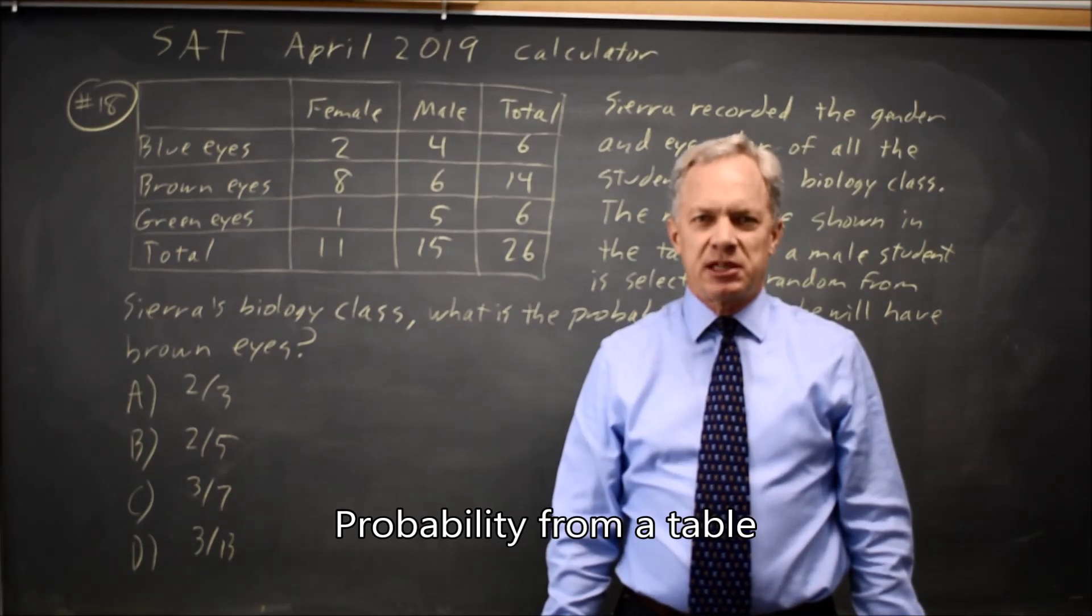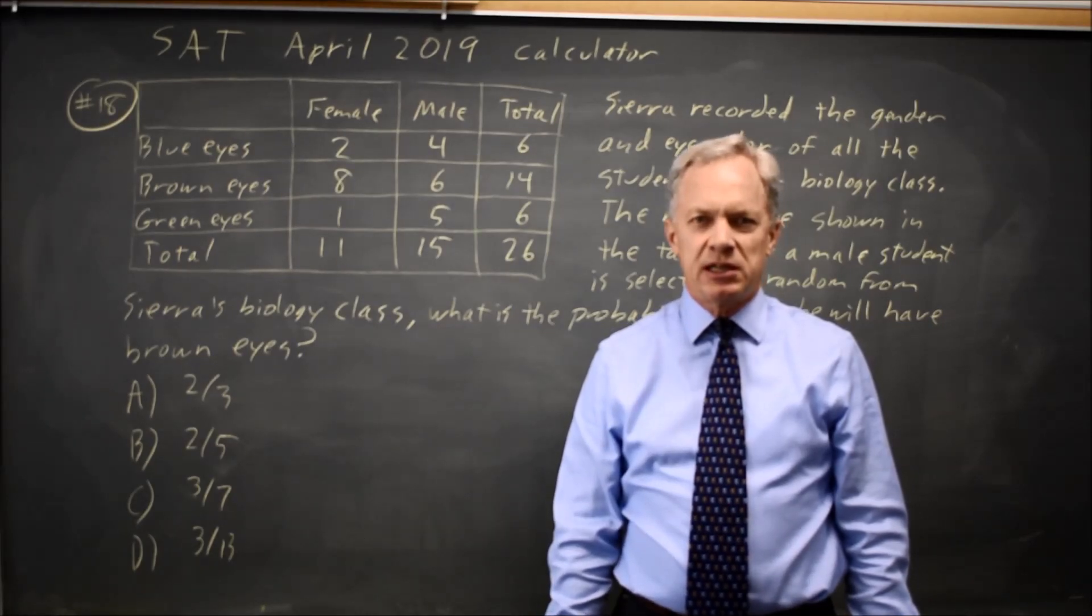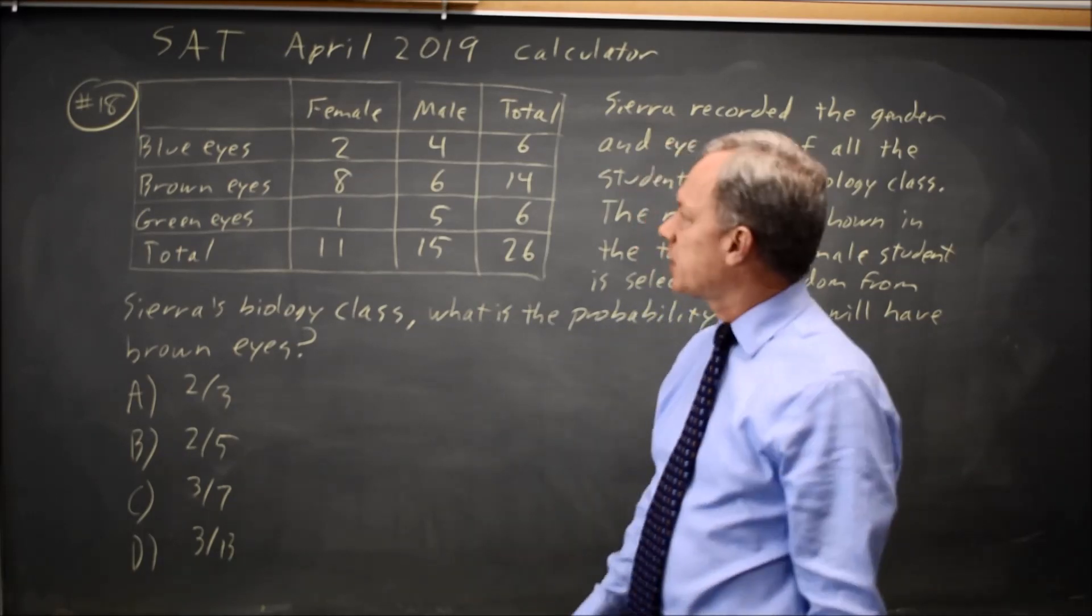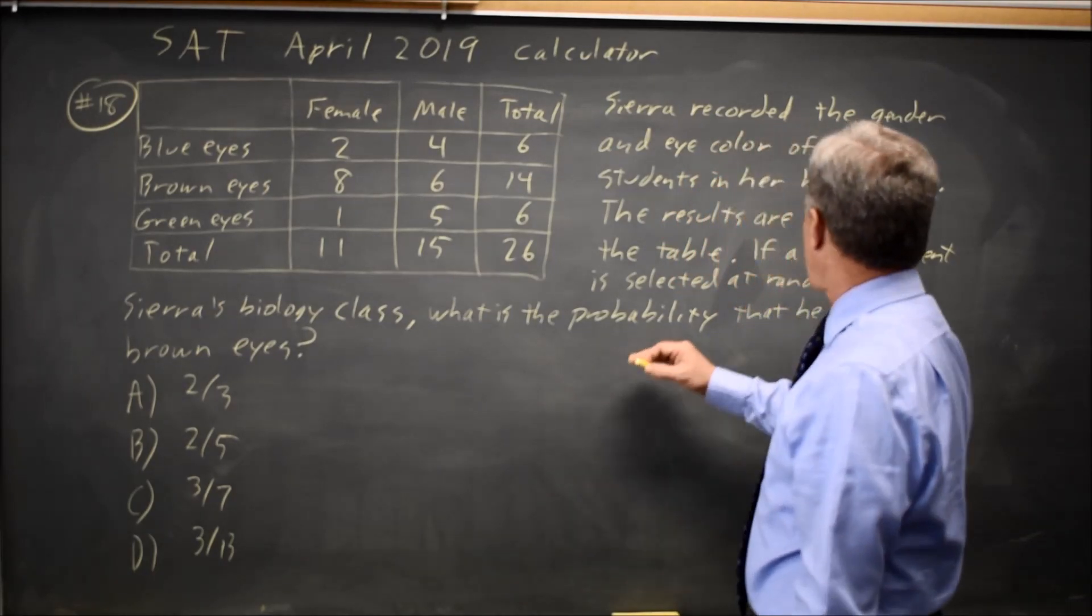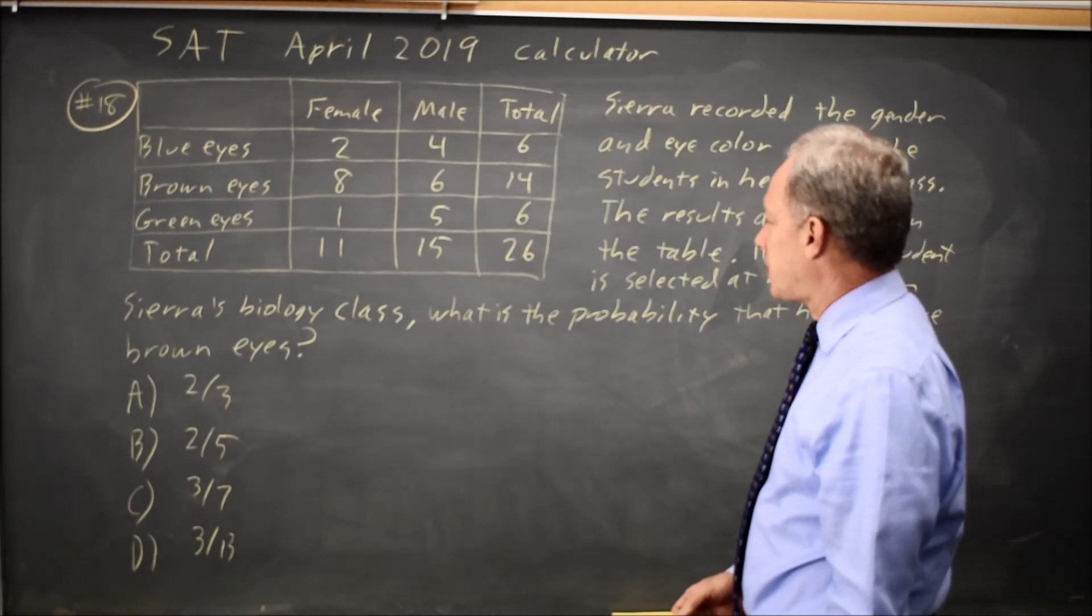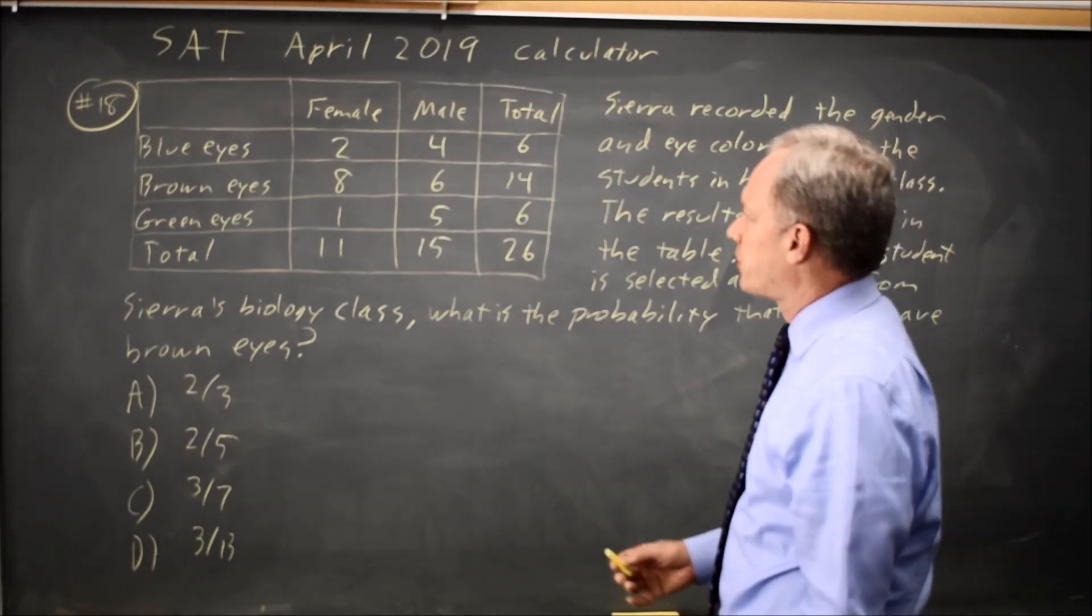This is calculator question number 18 from the April 2019 SAT. We're given a table of values for two categorical variables and we're asked if a male student is selected at random from Sierra's biology class, what is the probability that he will have brown eyes?